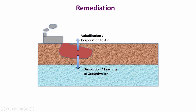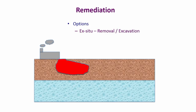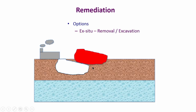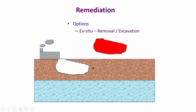One option that exists is what is called an ex-situ option: the removal of the entire contaminated zone. We take it out by excavation and the gap is filled up with clean material or a filler. This is possible when the site is open, and I have shown it schematically here.